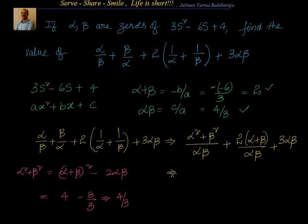So α² + β² is 4/3. I know the values of α + β and αβ, so I'm ready to substitute. This equals 4/3 divided by αβ, which is also 4/3, so that's 1. Then plus 2(α + β) = 2 × 2, divided by αβ = 4/3, plus 3 × αβ = 3 × 4/3.